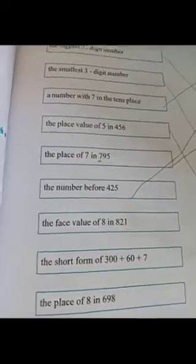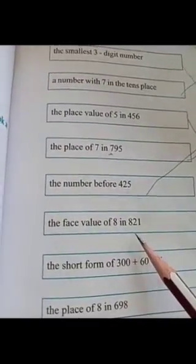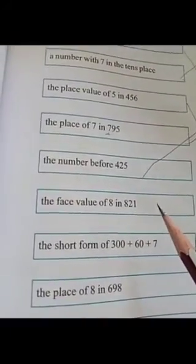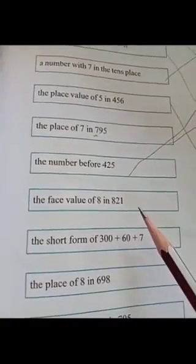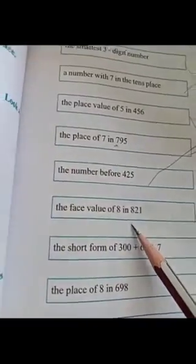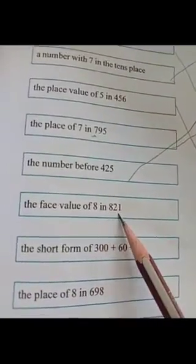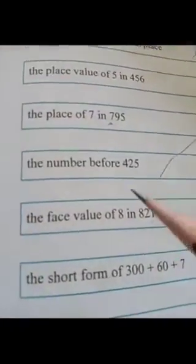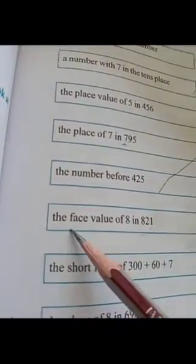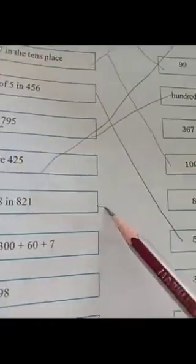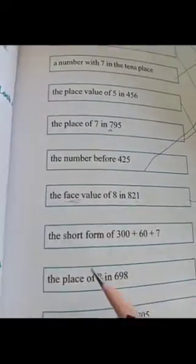Next one — the face value of eight in eight hundred and twenty-one. Not place value, children — face value. The face value of eight is eight. Same, only. Year only having. Okay, next one.